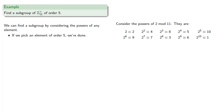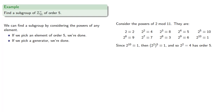Since 2 to the 10th is congruent to 1, then 2 to the 2nd, raised to the 5th, is also congruent to 1. So 2 squared, which is 4, has order 5. If we pick a generator, we're done — we can find that element of order 5, and correspondingly the subgroup of order 5.